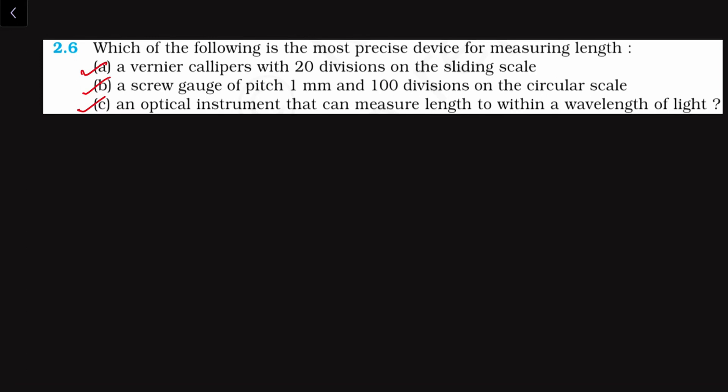So we can say that the most precise device amongst these three will have the minimum least count. That means out of these three given devices, whichever has the lowest or minimum least count will be the most precise device. So let us check the least count of each device one by one.